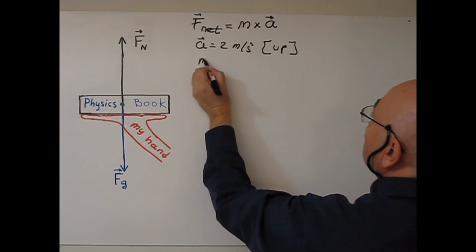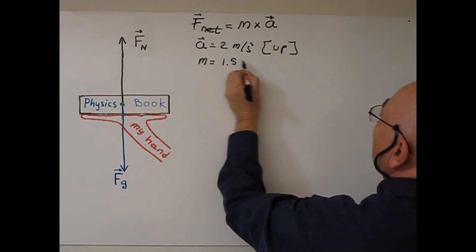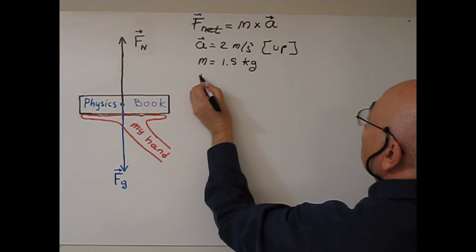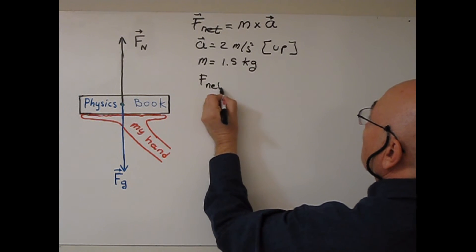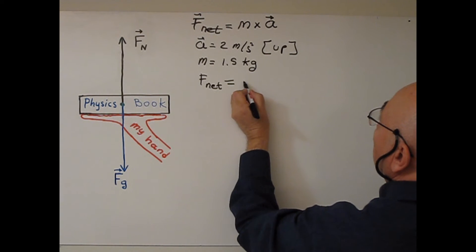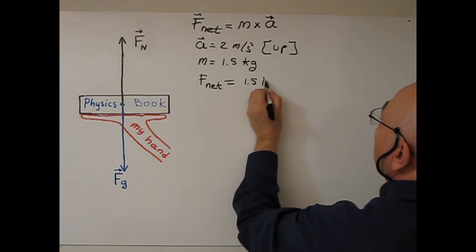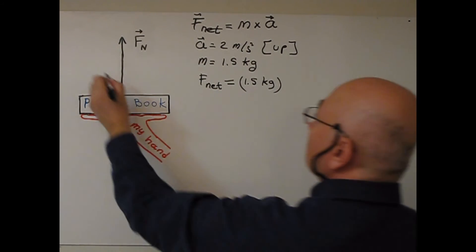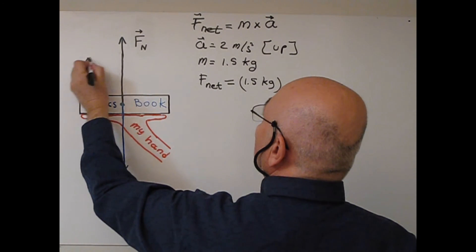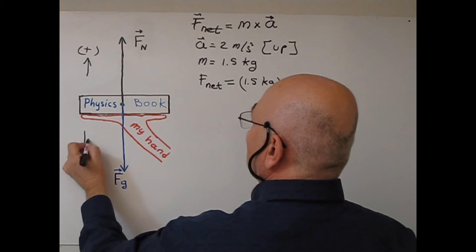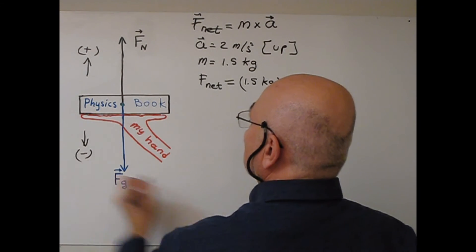Mass of the book 1.5 kilogram. So in this case, F net will be 1.5 kilogram. So let's assume up is positive. We can accept negative also, doesn't matter.